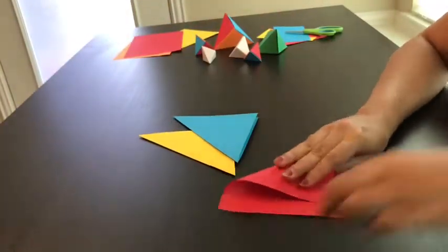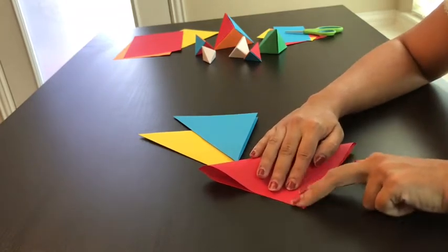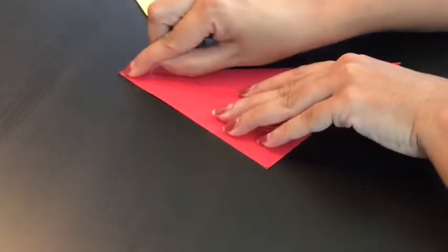Once you have three squares ready, fold them into triangles. If you've already folded them one way, fold them the opposite.